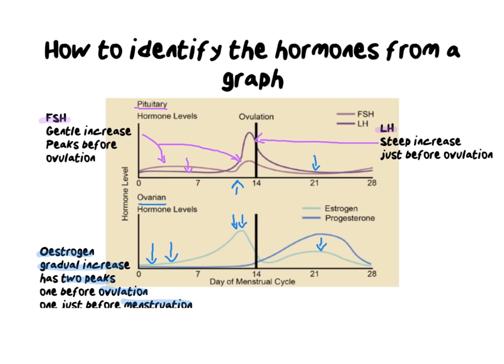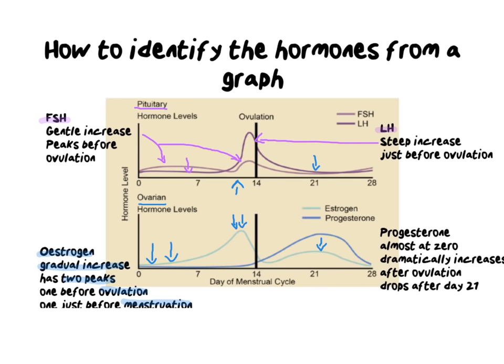The final hormone is progesterone, the pregnancy hormone. Looking at the graph, this darker blue line shows progesterone sitting at almost zero from day zero all the way to around day 14. That makes sense because progesterone is a pregnancy hormone — you're not going to make it if you're not pregnant or preparing to be pregnant.